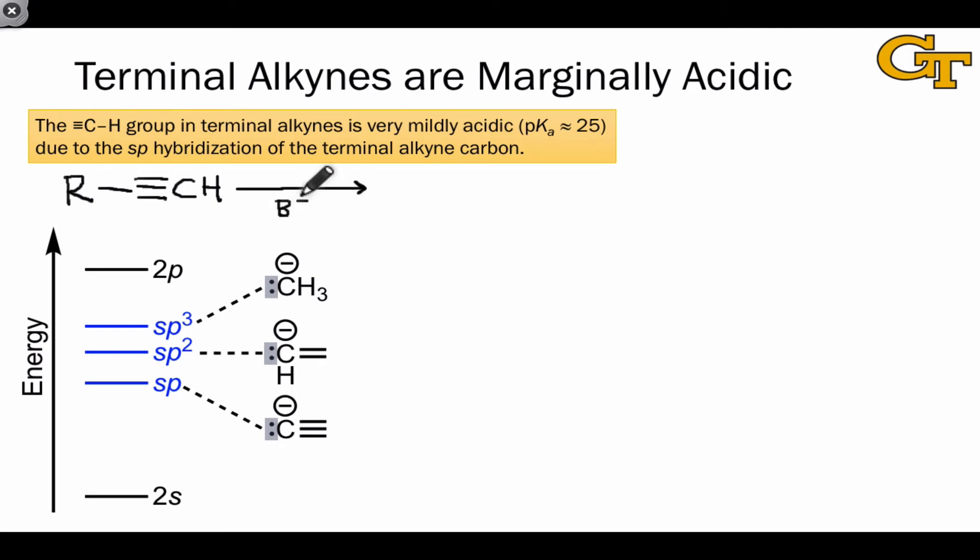This means that a strong enough base can remove this proton, generating an intermediate with an anionic sp-hybridized carbon called an acetylide.